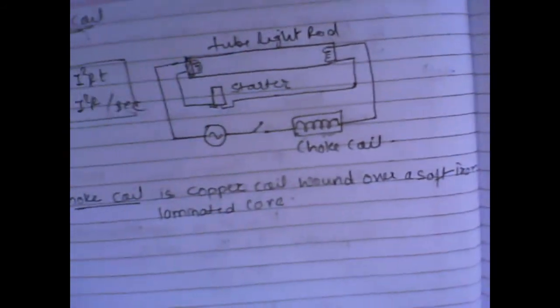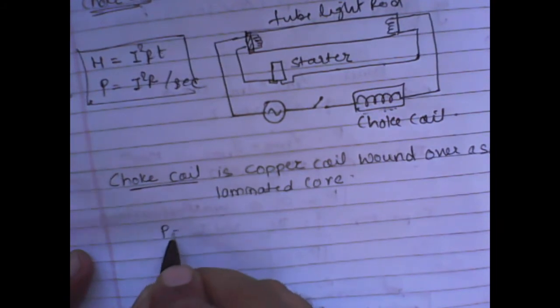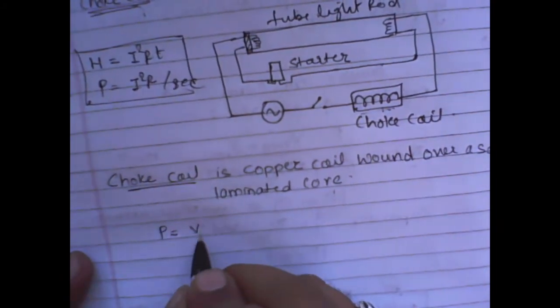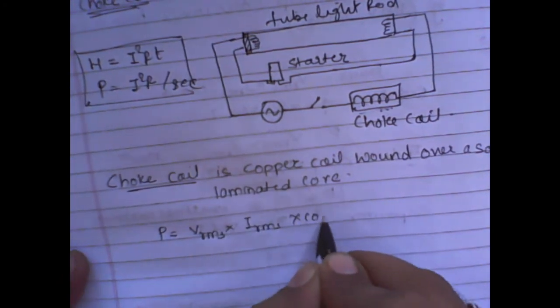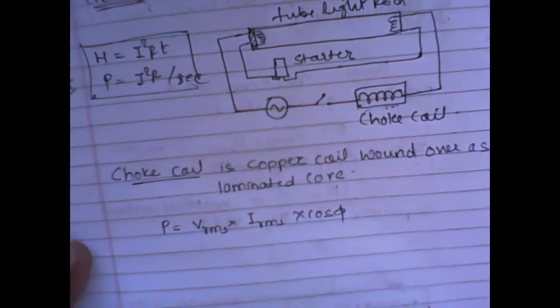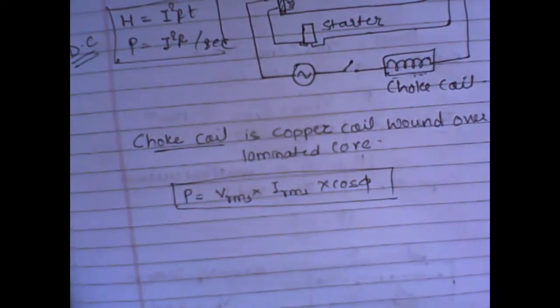Why are we using a choke coil? If you come to the equation, the power dissipated in alternating current is V_RMS into I_RMS into cos φ. This is the equation that we have derived.